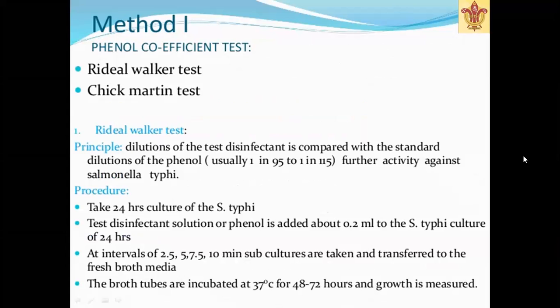In the phenol coefficient method, there are two tests: the Rideal-Walker test and the Chick-Martin test. For the Rideal-Walker test, the principle is that the dilution of the test disinfectant is compared with the standard dilution of phenol. This is why it is called the phenol coefficient method — phenol is taken as the standard, typically at dilutions of 1 in 95 and 1 in 105, and our disinfectant is compared against it.